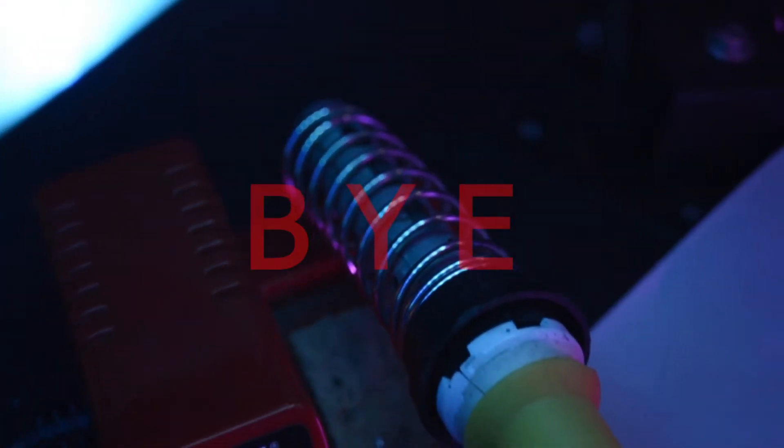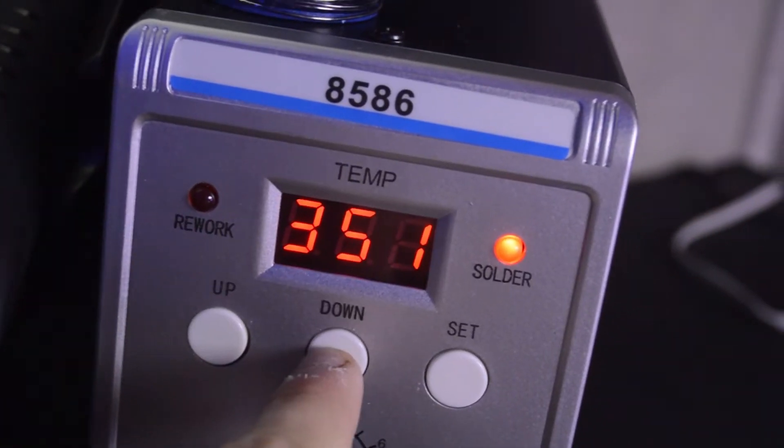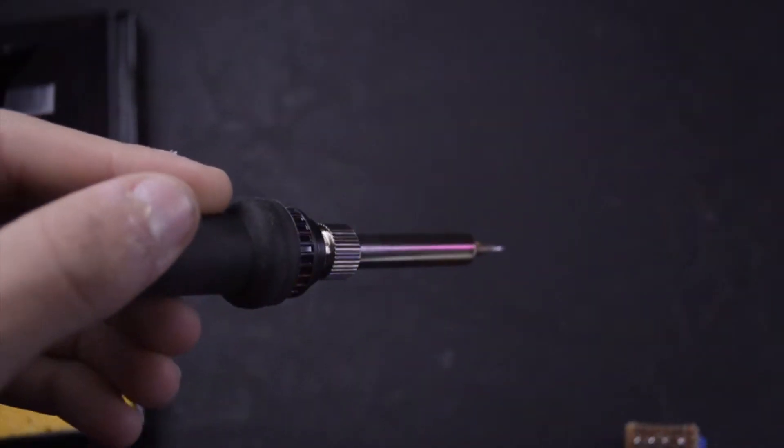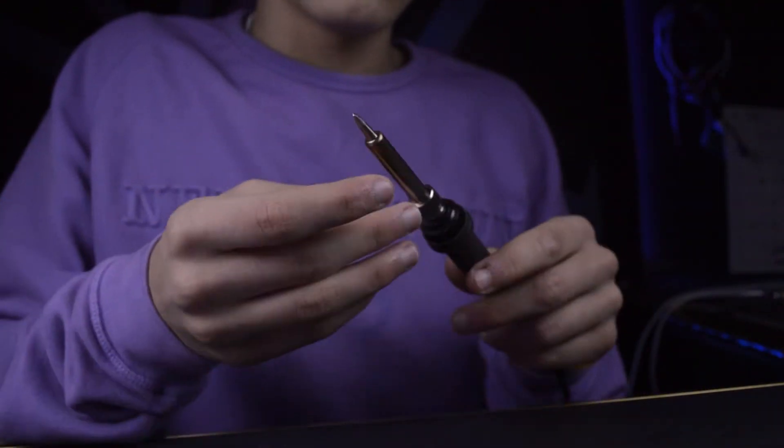Now for the soldering iron. Put your temperature to 350 degrees and don't forget to change the iron tip. I am using this tip because it's better when you solder on PCB.